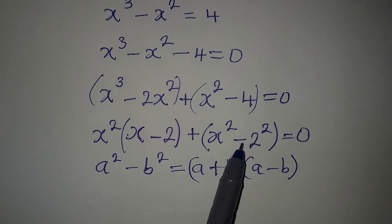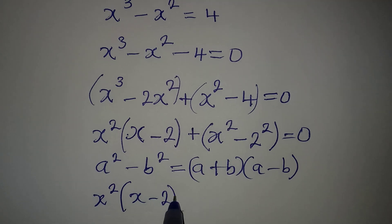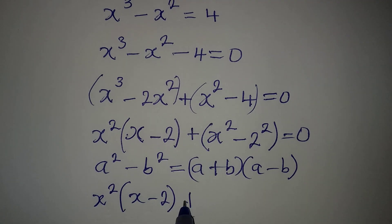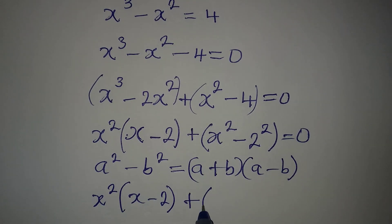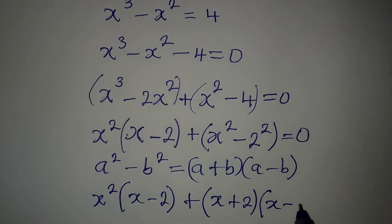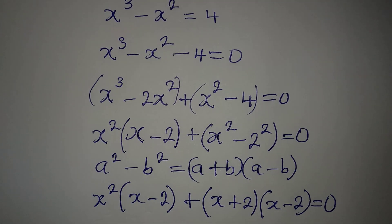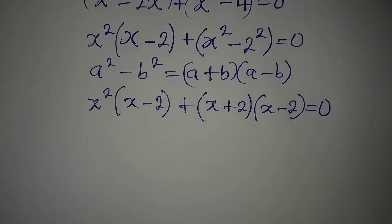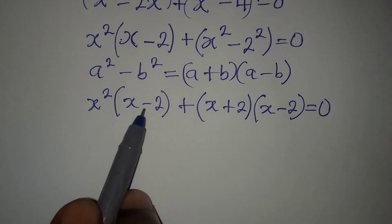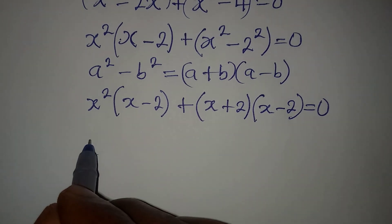I'll write this again: x squared times (x minus 2), then plus, for the difference of two squares we have (x + 2)(x − 2). This is equal to 0. Now let's look for what is common so we can factorize — x minus 2 is common, so bring it out as the common factor.